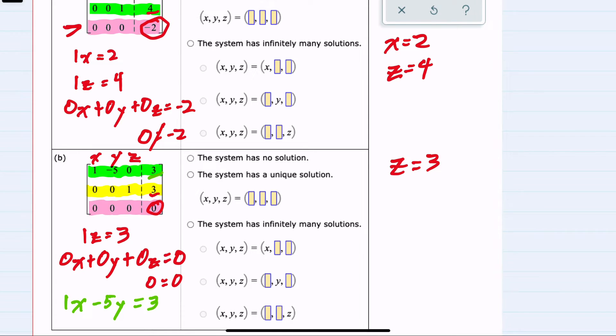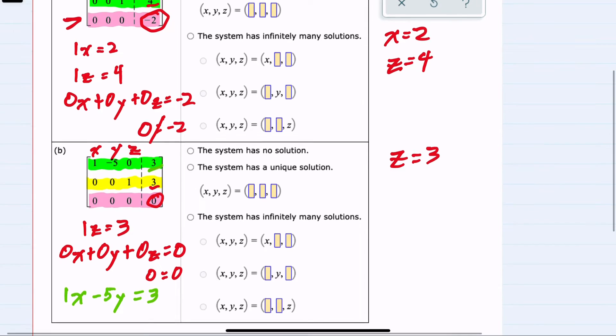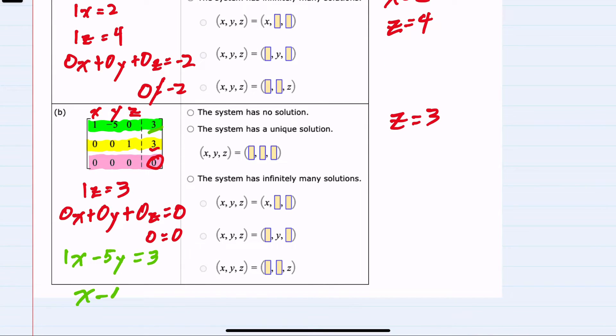We can say that x minus 5y equals 3. If I solve this for x, then x equals 5y plus 3.